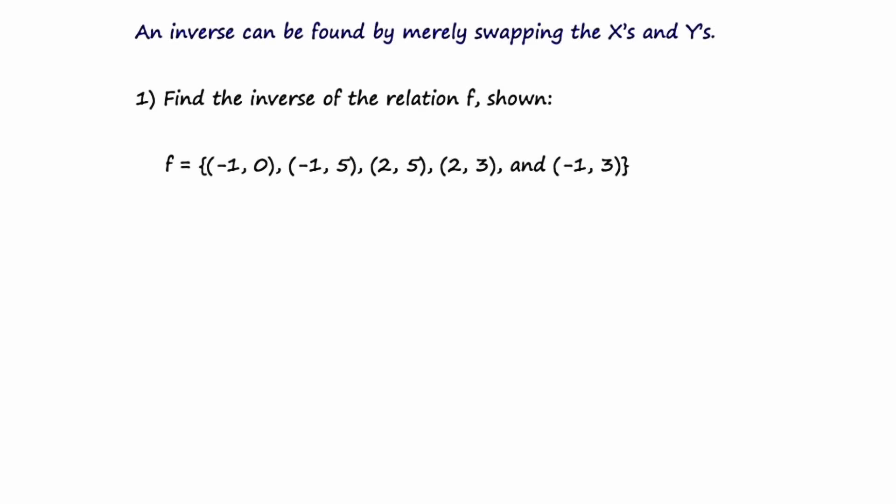An inverse can be found by merely swapping the x's and y's. Example 1: find the inverse of the relation f shown below. F is a set of ordered pairs that include (-1, 0), (-1, 5), (2, 5), (2, 3), and (-1, 3). To find the inverse, I'm merely going to swap all the x's and y's.